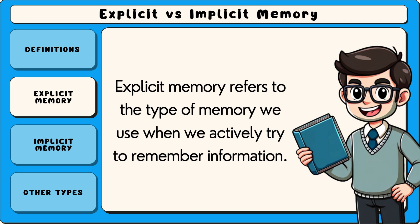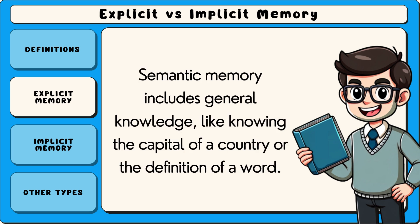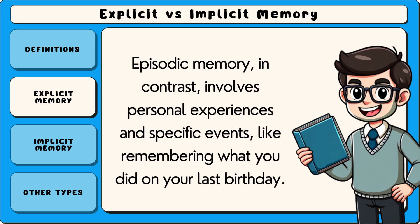Explicit memory refers to the type of memory we use when we actively try to remember information. It can be divided into two subcategories: semantic memory and episodic memory. Semantic memory includes general knowledge, like knowing the capital of a country or the definition of a word. Episodic memory, in contrast, involves personal experiences and specific events, like remembering what you did on your last birthday.